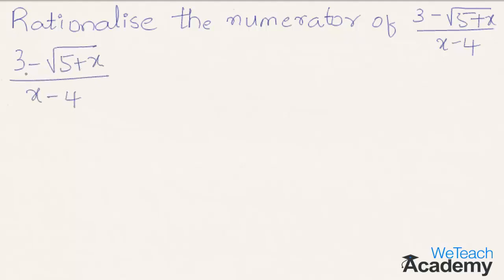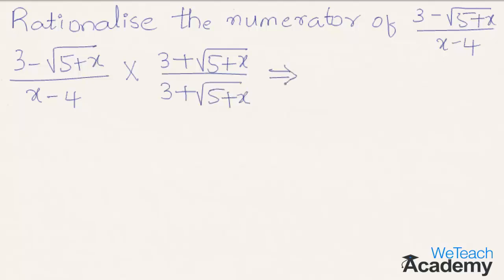So here we can say that the rationalizing factor of 3 minus under root 5 plus x is nothing but 3 plus under root 5 plus x. So now let us multiply the numerator and the denominator by the rationalizing factor.